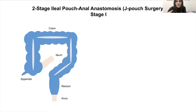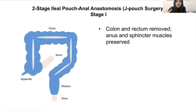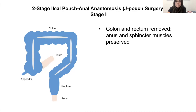In a two-stage IPAA or J-pouch operation, the first thing we do is remove the entire colon and rectum. The anus and the sphincter muscles are preserved, which is why you can maintain continence when you do a J-pouch operation. Your anus is not removed, nor is the small bowel or the ileum, so you can continue to absorb nutrients and maintain your health without a colon.